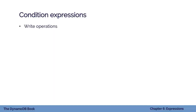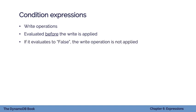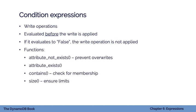Now let's cover write expressions. The first is the condition expression, which applies to any write operation — put item, update item, delete item. The condition expression is evaluated before the write is applied. If it evaluates to false, the write is not applied. This is useful for scenarios like preventing overwrites of existing items or ensuring a bank balance doesn't go below zero. Functions available include attribute_not_exists to prevent overwrites, attribute_exists to confirm an item exists, contains to check set membership, and size to enforce limits.